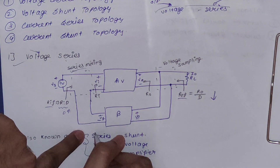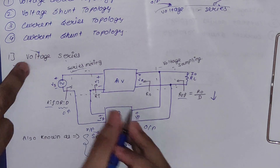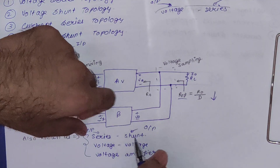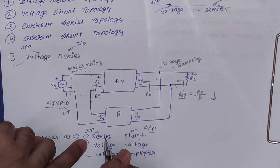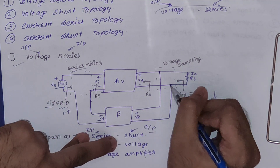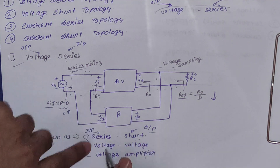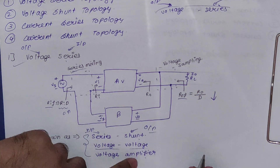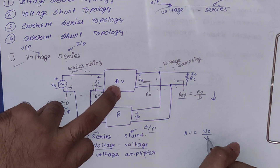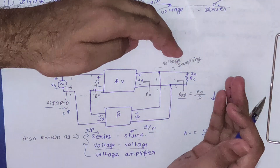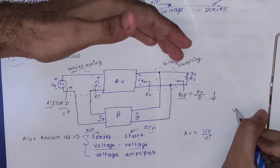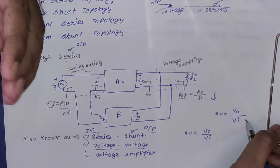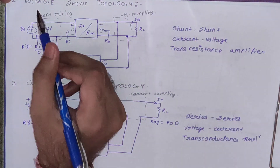The voltage-series topology has several alternative names. It is called series-shunt (series mixing at input, shunt sampling at output). It is also called voltage-voltage, since both mixing and sampling are in terms of voltage. It is also called a voltage amplifier, because the gain Av = Vo/Vi involves voltage at both input and output — voltage sampling at output and voltage mixing at input.